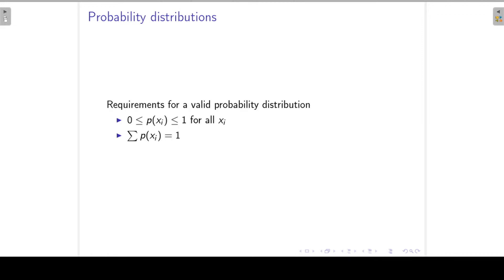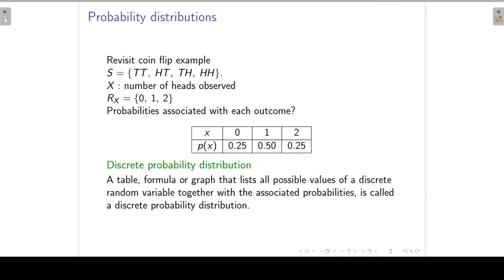What are the requirements for a valid probability distribution? First of all, all the probabilities must lie between zero and one inclusive — you cannot get negative probabilities and you cannot get probabilities that exceed one. And if we sum these probabilities, they have to add to one. You can verify that 0.25 plus 0.5 plus 0.25 adds up to one.